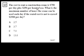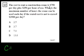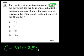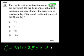The cost to rent a construction crane is $750 per day plus $250 per hour of use. What is the maximum number of hours the crane can be used each day if the rental cost is not to exceed $2,500 per day? So the cost per day equals 750 — no matter how little or much we use it, we have to pay that $750 per day — plus $250 times the number of hours. This total cost has to be less than or equal to $2,500.